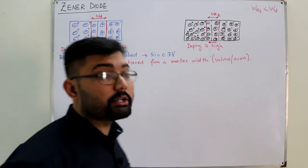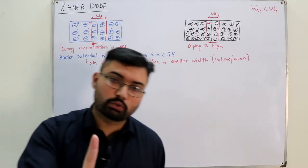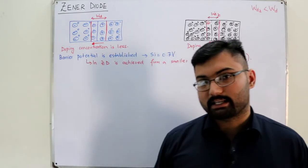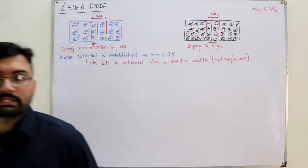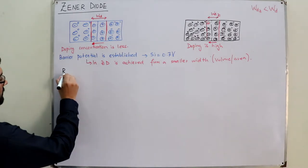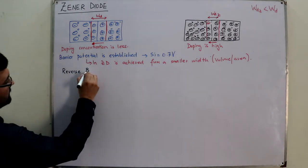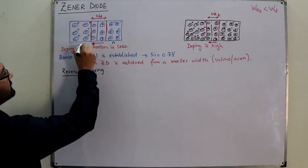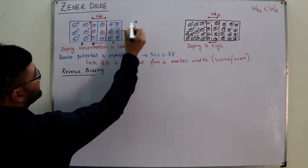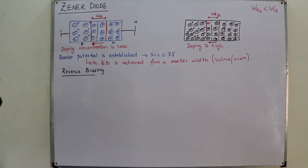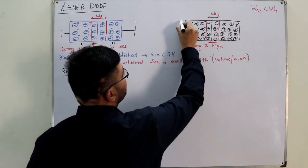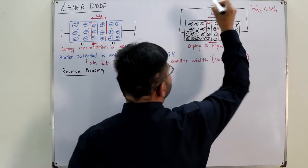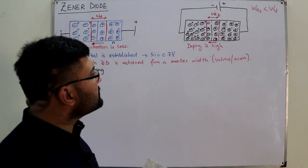The forward bias characteristics of the Zener diode are the same as an ordinary p-n junction diode. The difference lies in the reverse bias characteristics. Under reverse biasing, the n-side is connected to the positive terminal and the p-side to the negative terminal of the battery — for both the ordinary and the Zener diode.